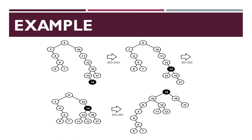Now let us see the example for splay tree. This is a binary search tree with elements 8, 3, 10, 4, 11, 6, 12, 5, 7, 15, 13, 17 and 14. Here at the end, for the elements 15, 13 and 14, we need to perform zig-zag operation.